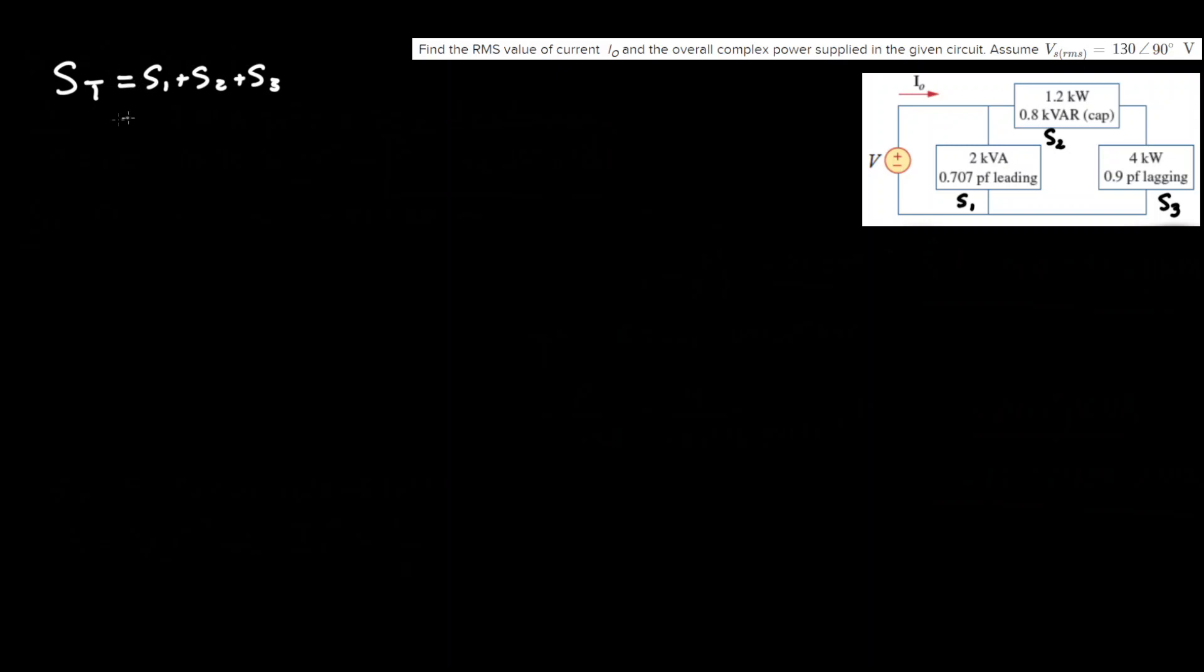So let's start with evaluating S1, this load right here. So we can see that there's 2 kilovolt amps, and as we know kilovolt amps is a unit of just complex power S. So we can just say magnitude S equals 2 kVA and also we are given for the angle the power factor is equal to 0.707 leading, and as you know leading is negative.